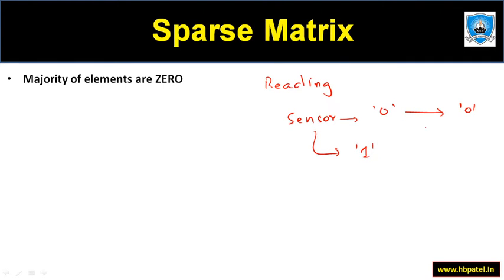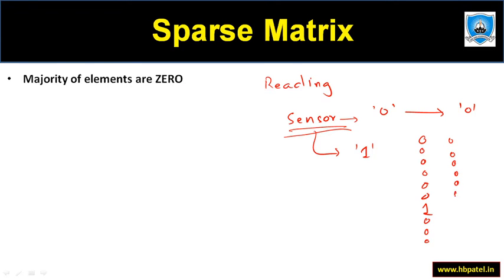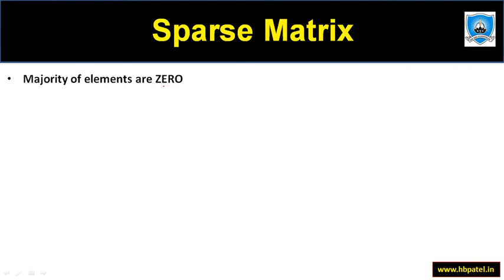So if we read the data elements given by a sensor, it would be mostly like zero, zero, zero, zero, zero, zero. The moment it detects something it will be one, then again zero, zero, zero, zero. So most of the time the data will be zero, and if there is some detection — motion detection or something else — it will be one. So in examples where most of the elements are zero, we can use sparse matrix.